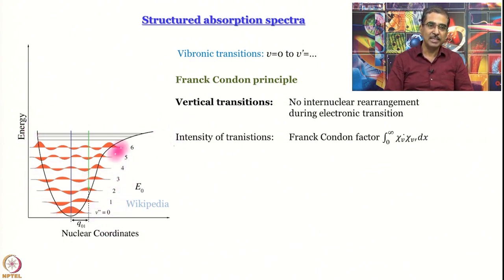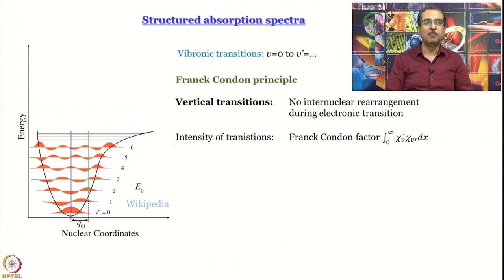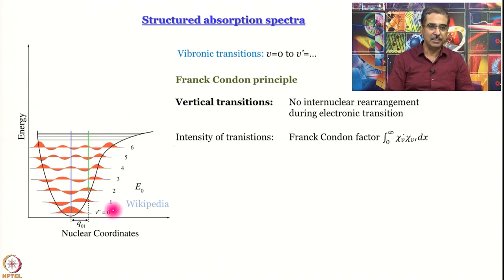This is the kind of potential energy surface you get for an actual diatomic molecule, where the energy gaps keep decreasing until they become a continuum. This is where, if you promote the molecule to that level, the bond is going to break. Another point to note is that there is a minimum non-zero value of energy corresponding to v equal to 0, called the zero-point energy.